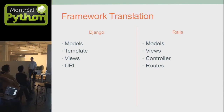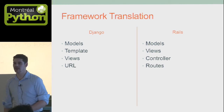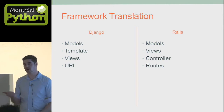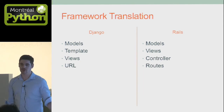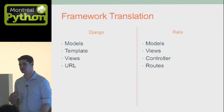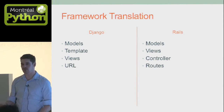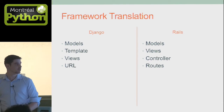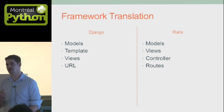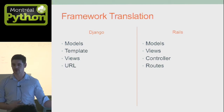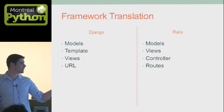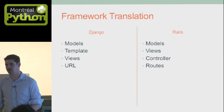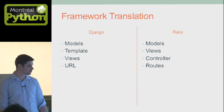Let's do some translation. Django on the right, Rails on the left. What you call a model, we also call a model — that one is easy. What you call a template is what we call a view. So just remember: if I say view, it really means a template for you. But if I'm speaking about controllers, it means views for you. So this one is kind of tricky. And the last one, URL and routes — this one's pretty easy. It's really the view/controller translation that is harder to understand.